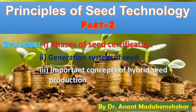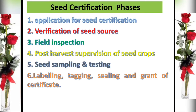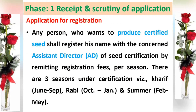Today's topic is seed certification phases. For seed certification, there are six phases: first, application for seed certification; second, verification of seed source; third, field inspection; fourth, post-harvest supervision of seed crop; fifth, seed sampling and testing; and sixth, labeling, tagging, sealing, and grant of certificate.